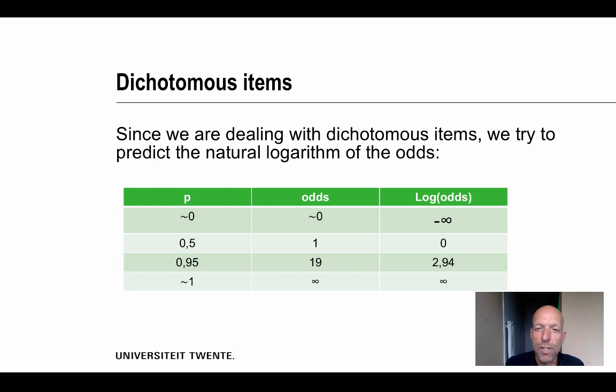Now we have transformed the same simple dichotomous variable by transforming it using the idea of the log odds into something which lies between minus infinity and infinity. And we can try to predict the log odds using a simple linear model.